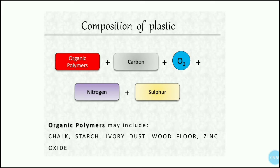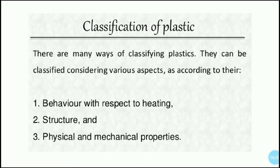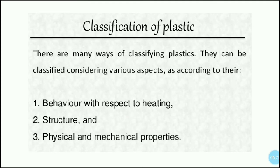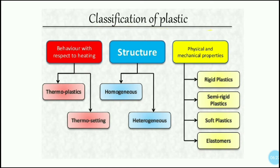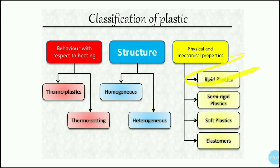Now we will see the classification of plastics. There are different ways to classify plastic. They can be classified according to their behavior with respect to heating, their structure, and their physical and mechanical properties. A classification chart shows: by heat behavior — thermoplastic and thermosetting; by structure — homogeneous and heterogeneous; by physical/mechanical properties — rigid, semi-rigid, soft plastic, and elastomers. In your syllabus, the focus is on behavior with respect to heat.